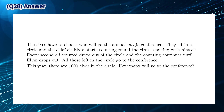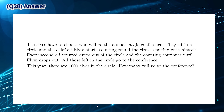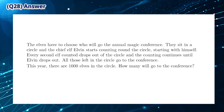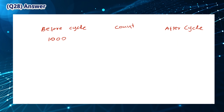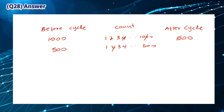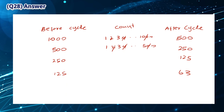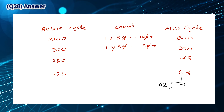The count goes around the circle several times with odd-numbered elves staying in and even-numbered elves dropping out. Whenever the count restarts at 1, we write a table of before and after each cycle. Starting with 1000 elves, even-numbered elves drop out leaving 500, continuing until the number reaches 125 — this is where Alvin drops out. After the cycle there are 63 elves, but subtracting Alvin leaves 62 elves. The answer is 62.